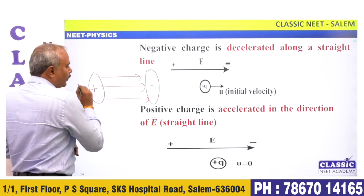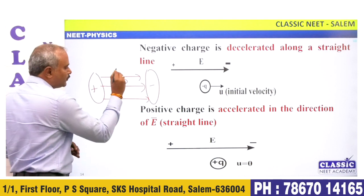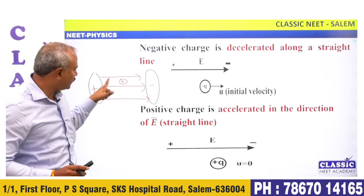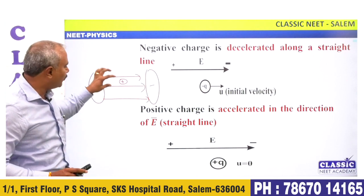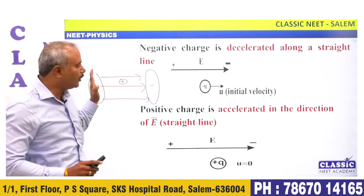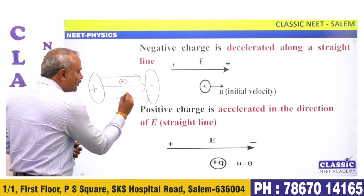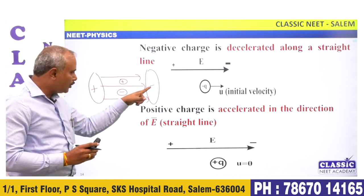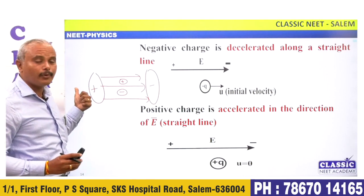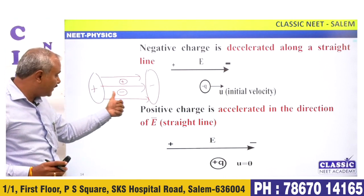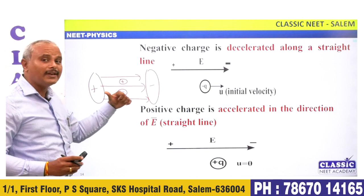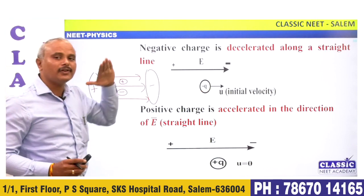Field lines originate from positive and end at negative. Now, what do we do with a positive charge in this field? A positive charge will repel, a negative charge will attract. When we place a positive charge in a field, it moves in the direction of the field. Field lines are in that direction. Negative charge will get decelerated; positive charge will accelerate in the direction of the field. Or, negative charge will move opposite to the field, positive charge will move in the direction of the field.